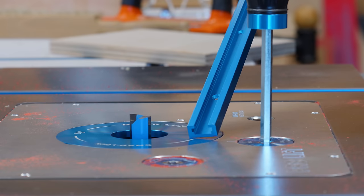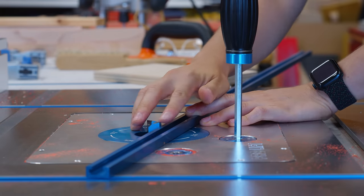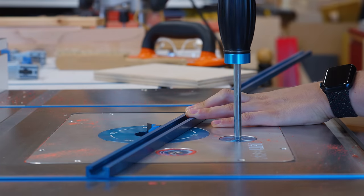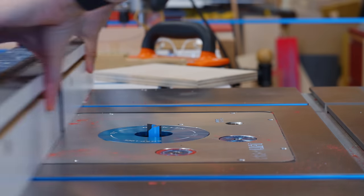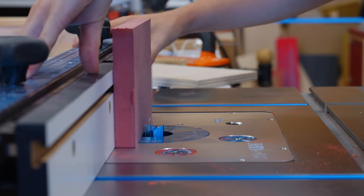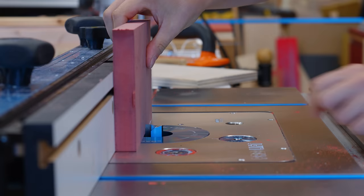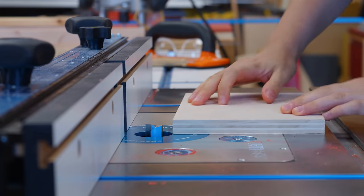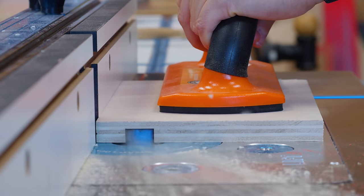While at the router table I changed the bit again for a three-quarter inch straight one and dialed the depth of cut to a hair deeper than the T-tracks I'll be installing in the tabletop. I did a first test on a scrap to check the correct depth.